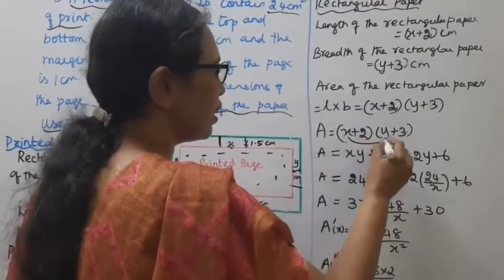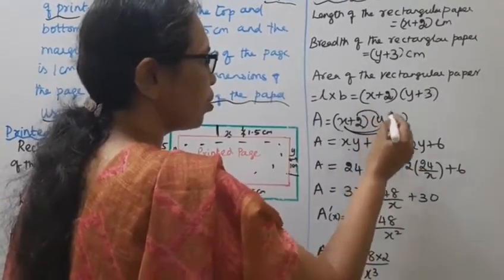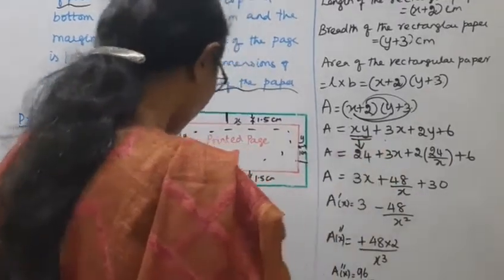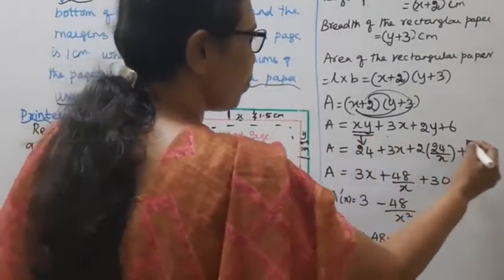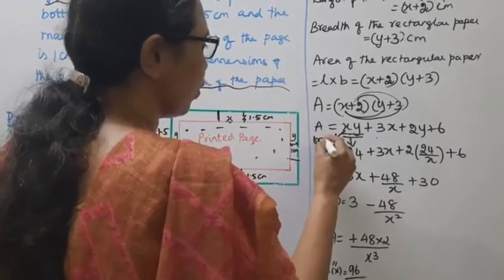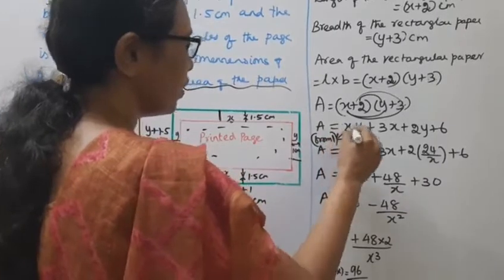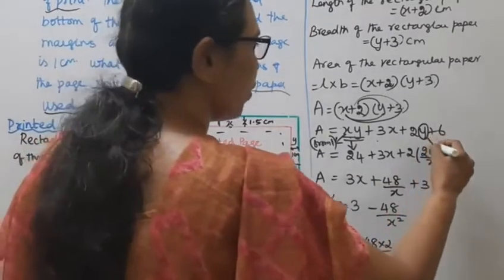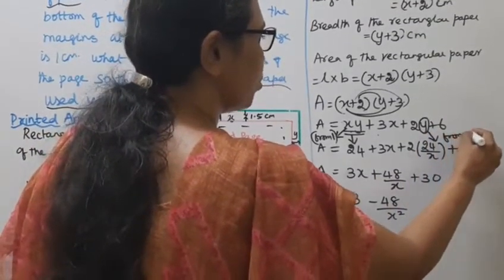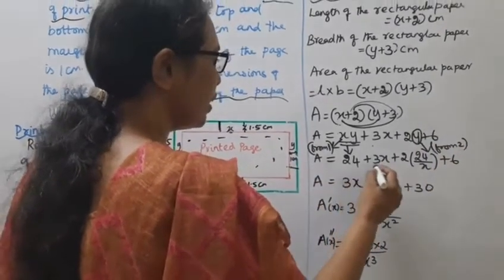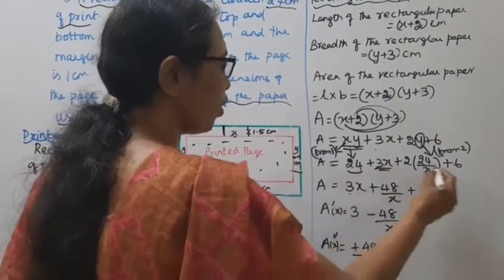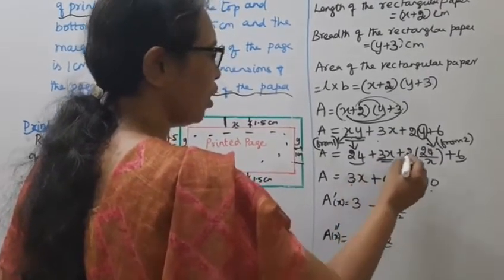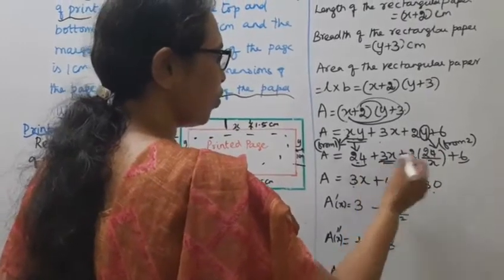Expanding: area A equals x times y plus x times 3 plus 2 times y plus 2 times 3, which gives xy plus 3x plus 2y plus 6. Since xy equals 24, substituting y equals 24 over x: A equals 24 plus 3x plus 2 times (24/x) plus 6, giving A equals 3x plus 48/x plus 30.